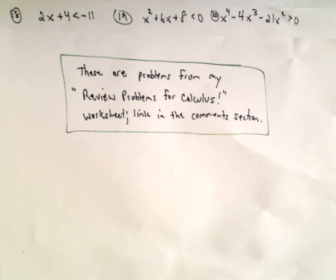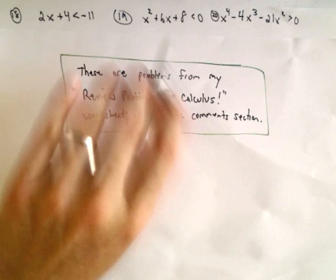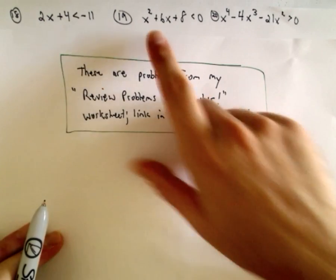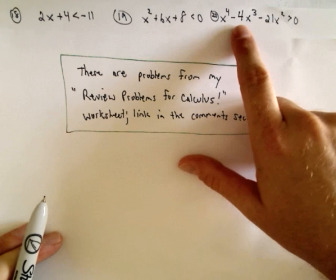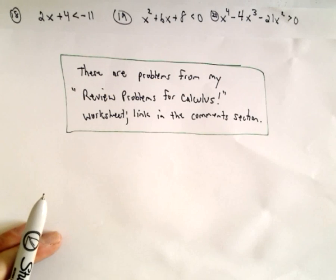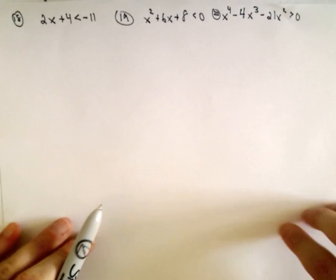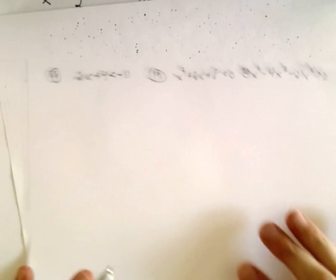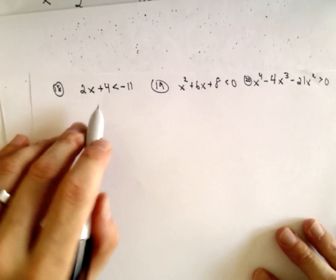Now we're going to turn to solving some inequalities. We've got a linear inequality, a quadratic inequality, and a quartic inequality — a fourth-degree polynomial. The basic idea: linear ones are easier, so let's do the linear one first, then we'll talk about the general procedure.